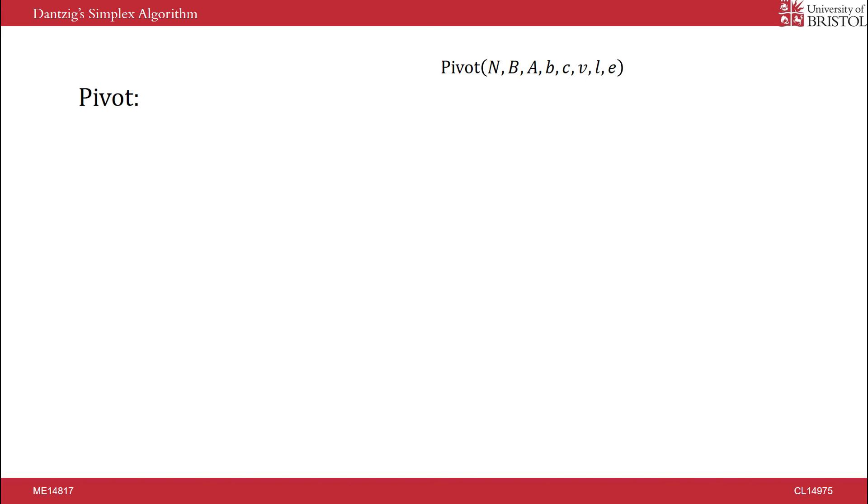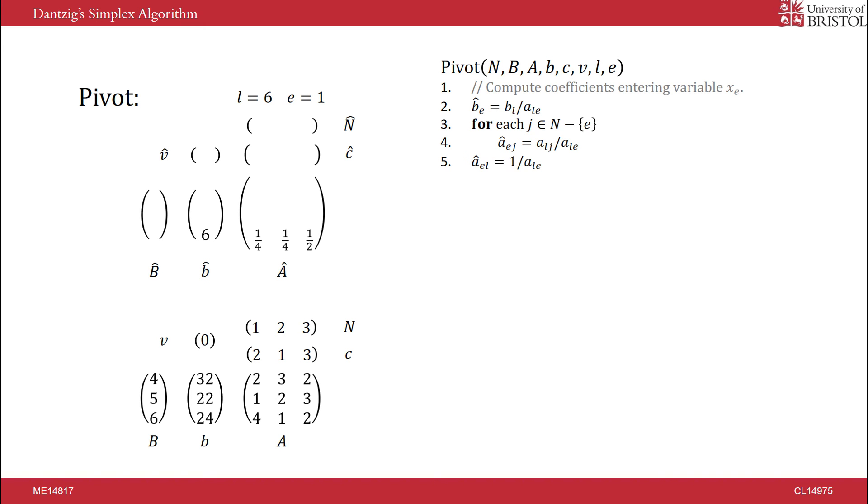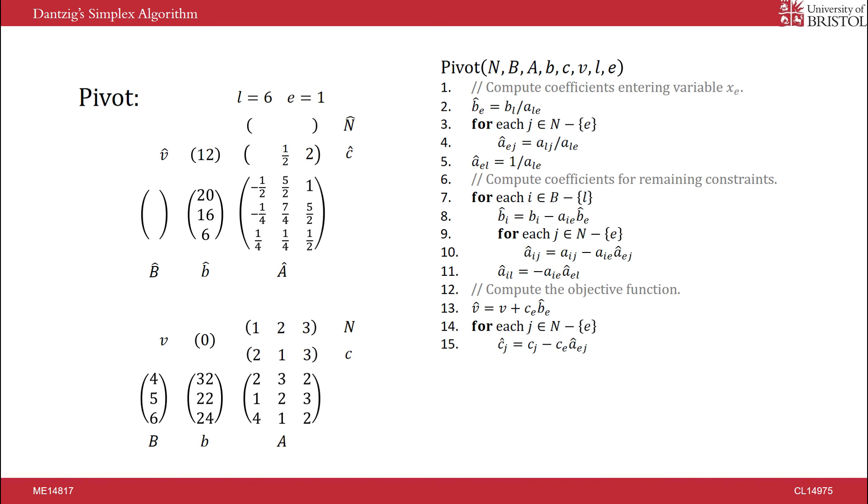Here is the pseudocode for the pivoting stage of the algorithm. Lines 3 to 5 essentially rearrange the constraint in terms of the new basic variable. Lines 7 to 11 loop through each basic variable and go through each non-basic variable in the corresponding constraint and compute its new coefficient. Lines 13 to 16 compute the new objective function. Lines 18 and 19 compute the new sets of the basic and non-basic variables.